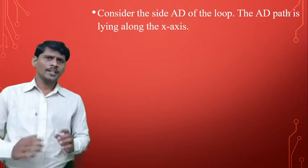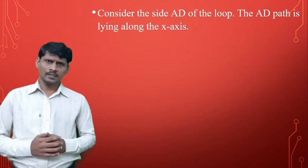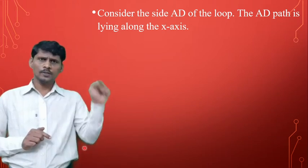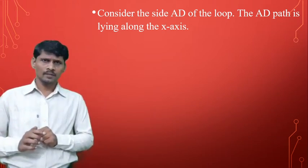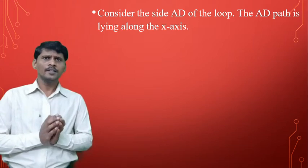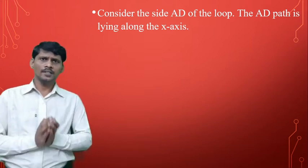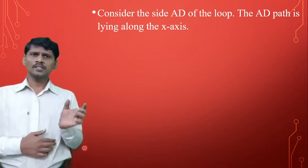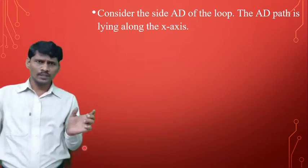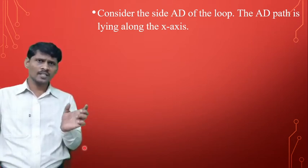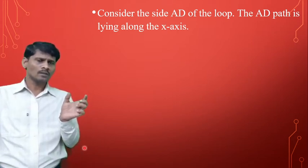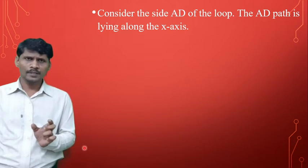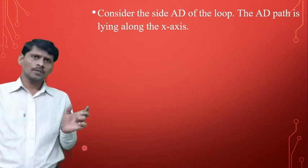First, calculate the magnetic field intensity for any one side of the conductor, say side AD. There are four sides of the square loop: A to B, B to C, C to D, and D to A — all finite conductors. Consider the conductor A to D. AD is one side of the square loop. Calculate the magnetic field intensity at point P due to the conductor path AD.